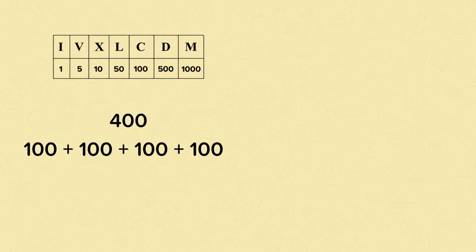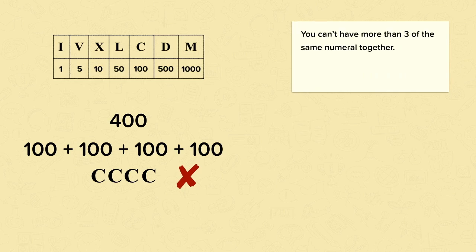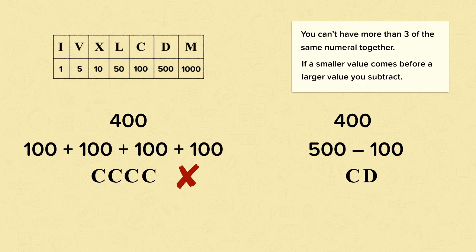Now let's have a look at 400. To make 400 we could add together four lots of 100 — in Roman numerals this would look like C, C, C, C — but this would be incorrect. One of the most important rules about Roman numerals is that you can't have more than three of the same numeral together. So how could we make 400? Instead of adding, you'd use subtraction: 500 subtract 100. So 500 is D, 100 is C, and to show subtraction we must put the smaller value, C, before the larger value, D. This brings us to our second rule: if a smaller value comes before a larger value, then you need to subtract.